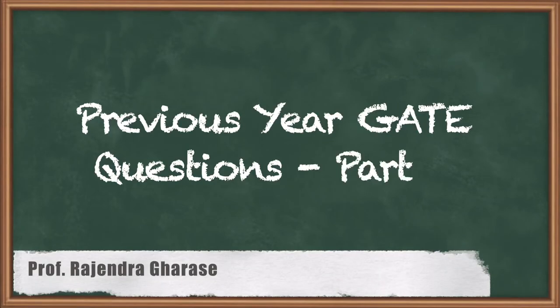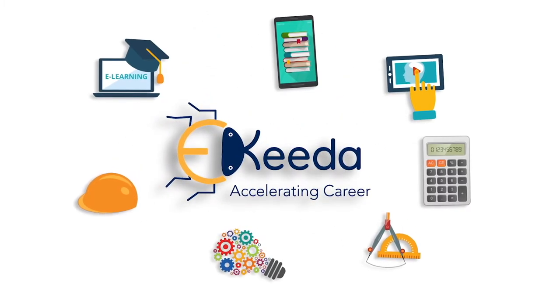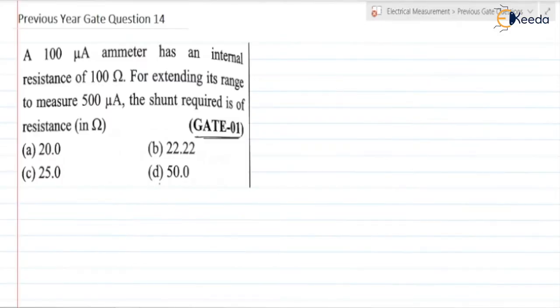Hello friends, in this video we are going to discuss previous year GATE questions. Previous year GATE question number 14. Let us read the question. A 100 micro ampere ammeter has an internal resistance of 100 ohm. For extending its range to measure 500 micro ampere, the shunt required is of resistance?